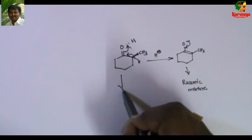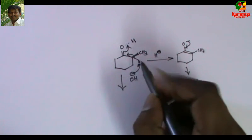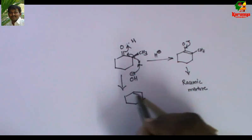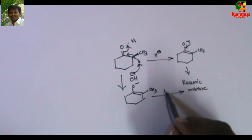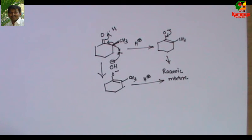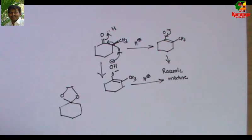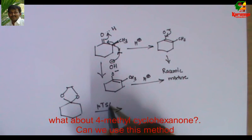The same thing may happen in the presence of a base. When a base is added, the base abstracts the alpha proton and enolization occurs. When the proton is returned, we get a racemic mixture. So this kind of compound undergoes racemization under both acidic and basic conditions.